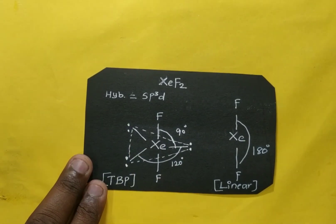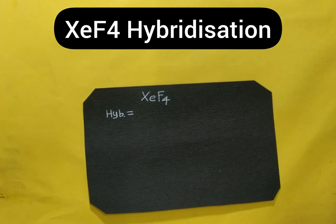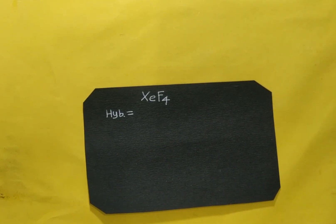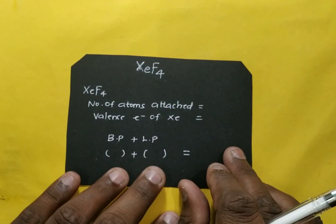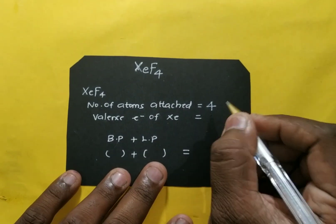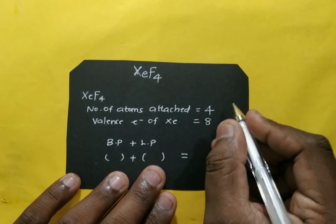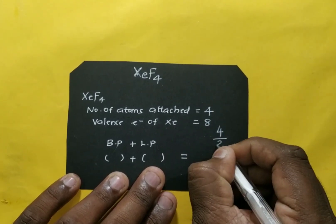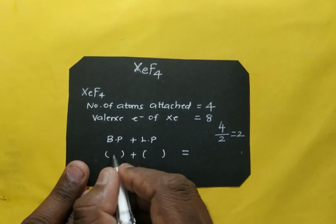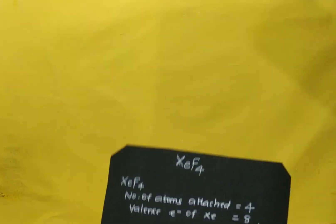For xenon tetrafluoride (XeF₄): number of atoms directly attached to xenon is 4, so bond pair = 4. Valence electrons = 8; remaining = 8 − 4 = 4; lone pairs = 4 ÷ 2 = 2. Total = 4 + 2 = 6, so hybridization is sp³d².